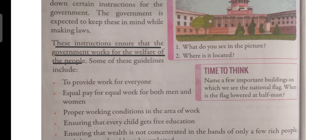Now let us do this time to think. Name a few important buildings on which we see the national flag, and when is the flag lowered at half mast? The important buildings on which we see the national flag are Rashtrapati Bhavan, Parliament House, Supreme Court, and High Court. The flag is lowered at half mast when either the president, prime minister, or the vice president dies while he or she is in service.